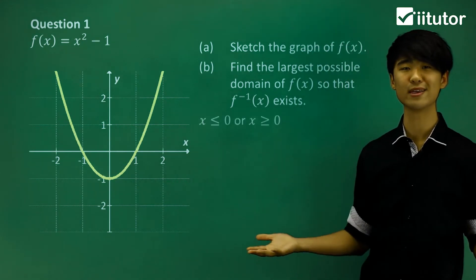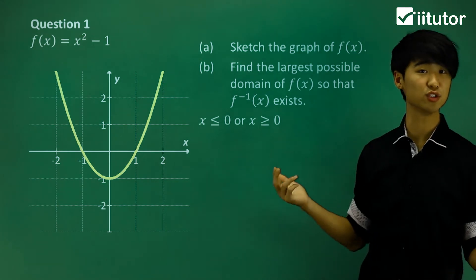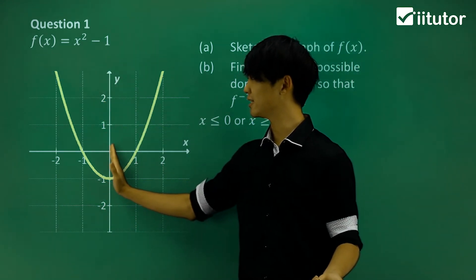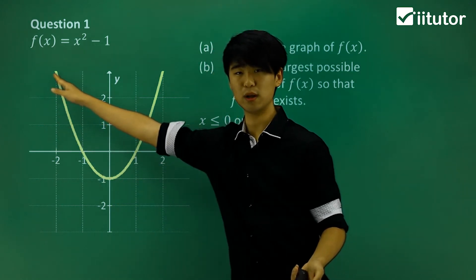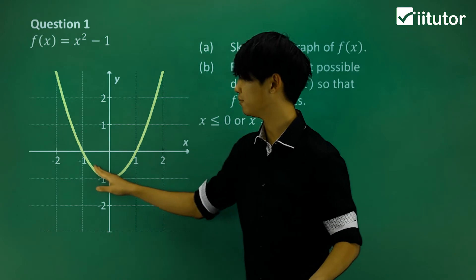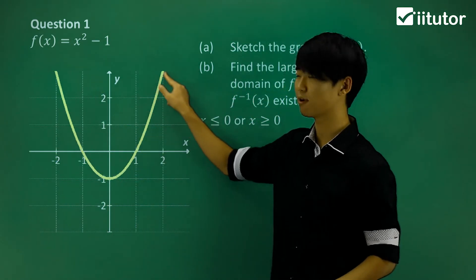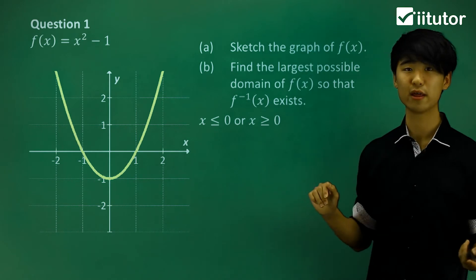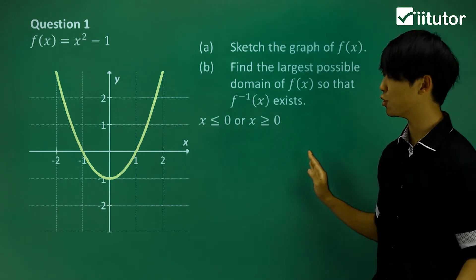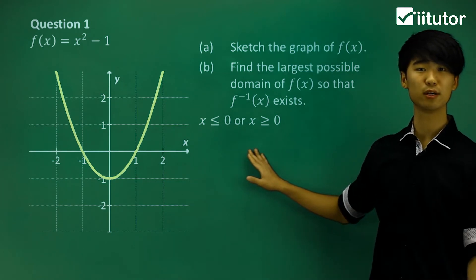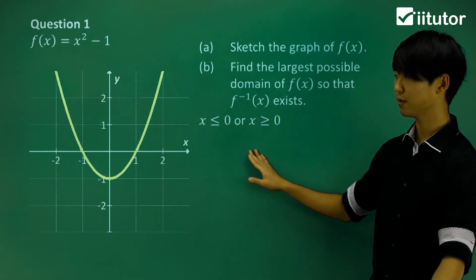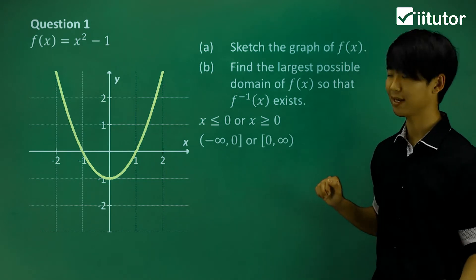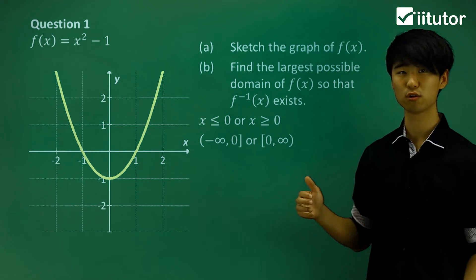To make this 1-to-1, let's look at the answer: x ≤ 0 or x ≥ 0. At x = 0, if I take only the left half of the parabola, it's 1-to-1. Similarly, if I take only the right half, that part is also 1-to-1. So we can take either side, but not the whole parabola — just one half — giving domains x ≤ 0 or x ≥ 0. Depending on your textbook or school, write the appropriate notation.